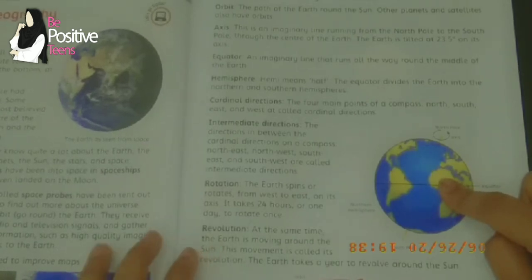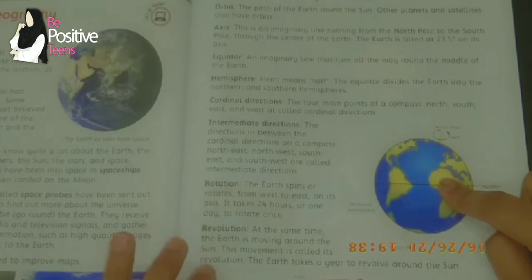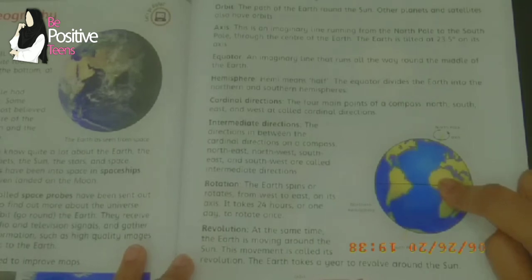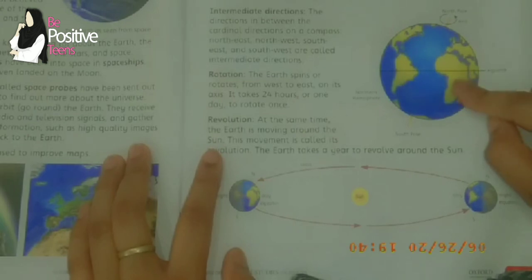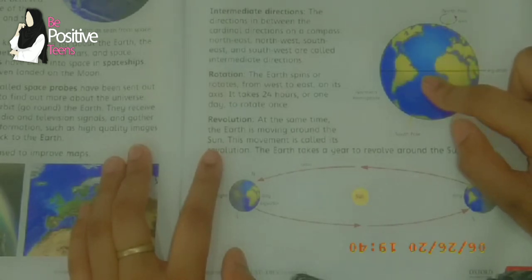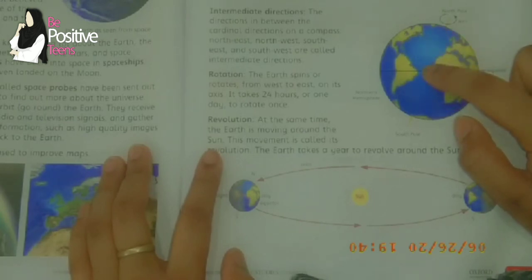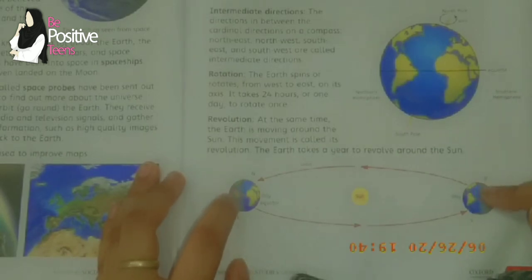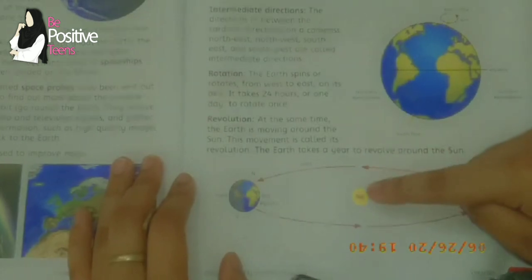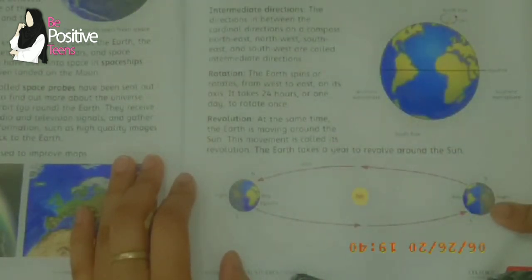Next is revolution. At the same time as it rotates, the earth is also moving around the sun — this movement is called its revolution. The earth takes one year to revolve around the sun. So rotation is when the earth spins on its own axis, while revolution is when the earth moves around the sun along its orbit. When the earth completes a full path around the sun, that is one revolution.